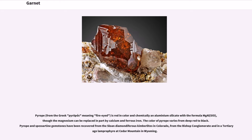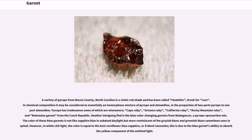Pyrope, from the Greek pyropos meaning fire-like, is red in color and chemically a magnesium aluminium silicate with the formula Mg₃Al₂(SiO₄)₃, though the magnesium can be replaced in part by calcium and ferrous iron. The color of pyrope varies from deep red to black. Pyrope and spessartine gemstones have been recovered from the Sloan diamondiferous kimberlites in Colorado, from the Bishop conglomerate, and in a Tertiary-age lamprophyre at Cedar Mountain in Wyoming. A variety of pyrope from Macon County, North Carolina, is a violet-red shade and has been called rhodolite, from the Greek meaning rose. In chemical composition it may be considered as essentially an isomorphous mixture of pyrope and almandine in the proportion of two parts pyrope to one part almandine.